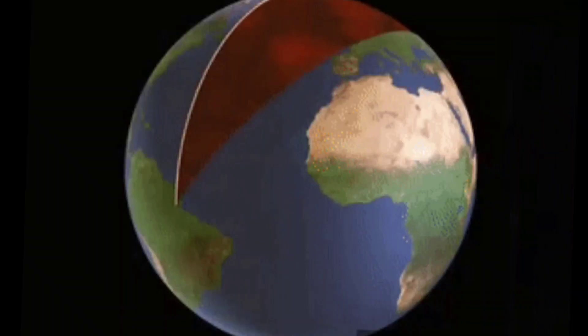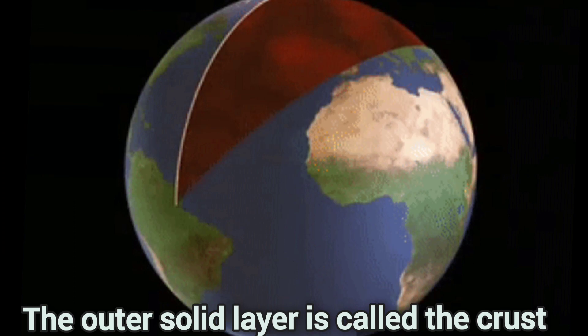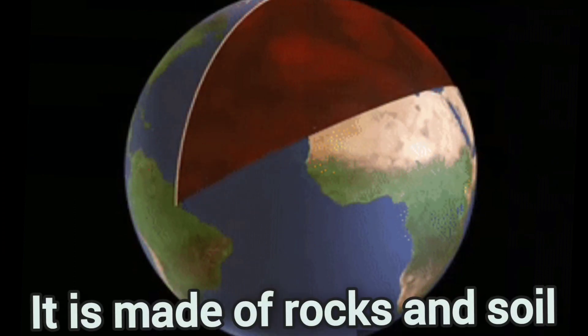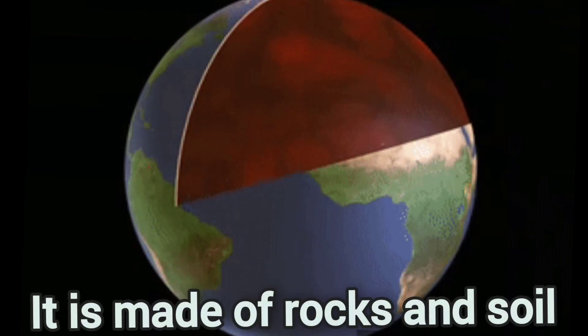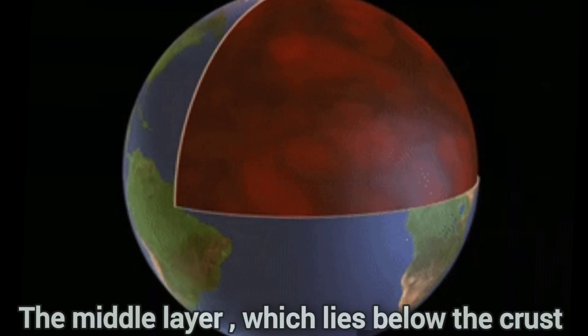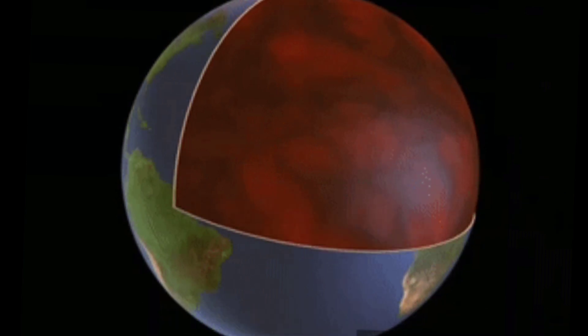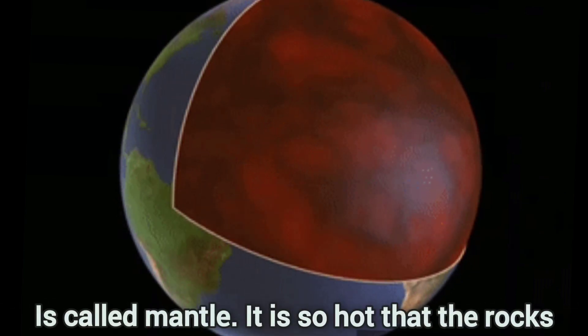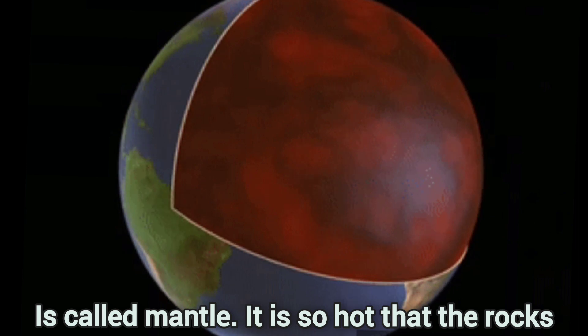The outer solid layer is called the crust. It is made of rocks and soil. The middle layer which lies below the crust is called the mantle. It is so hot that the rock melts to form a thick liquid.